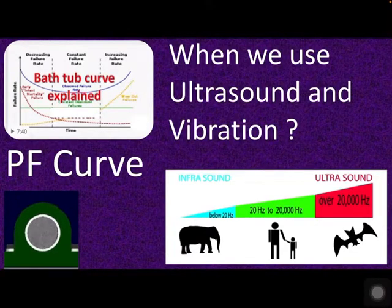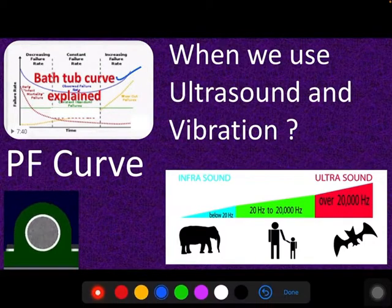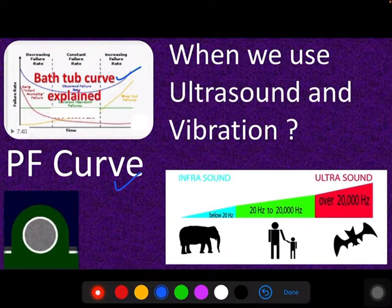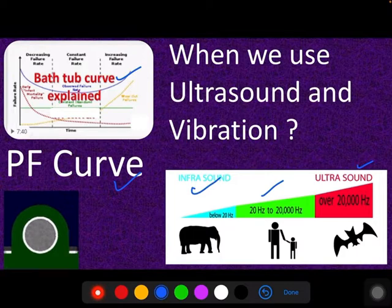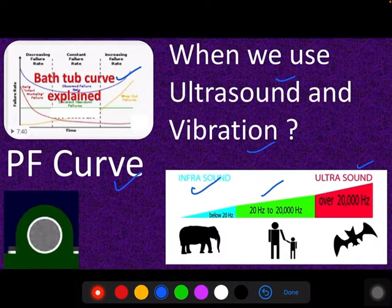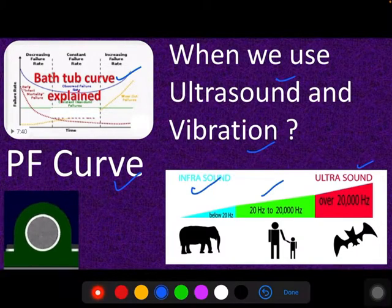Hi friends, welcome to Mega Technical Hub. Today we will discuss some reliability curves: the bathtub curve, the PF curve (potential failure curve), and different frequency ranges — what is infrasound, what is the audible range, and what is ultrasound. We'll also cover when to use ultrasound versus vibration, and their significance in predicting machine health in any industry.